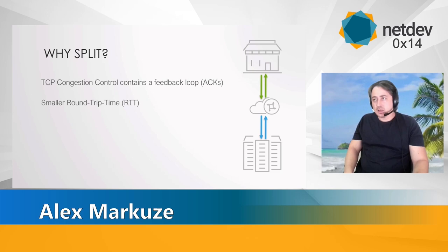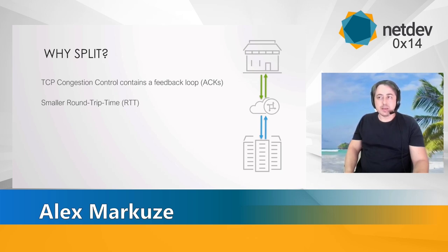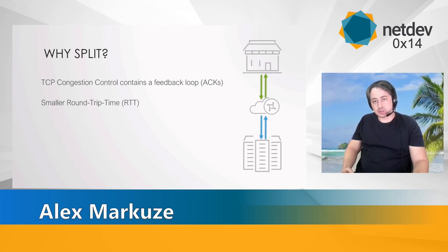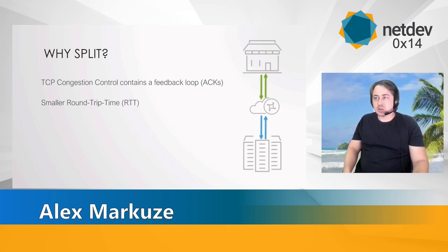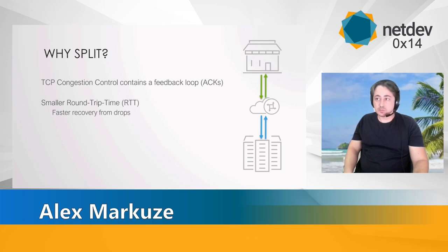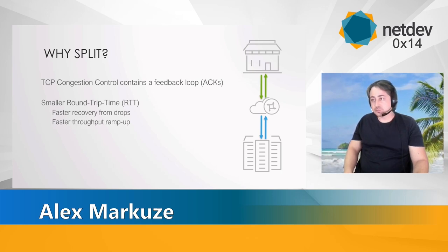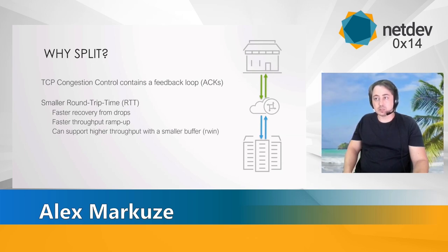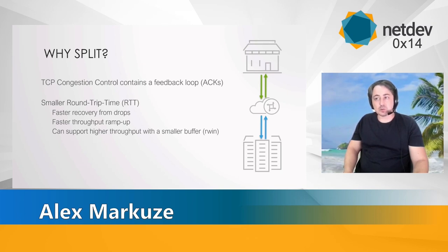So why is this useful? TCP modulates its behavior based on the ACKs it receives. A tighter control loop provides a better TCP experience. A shorter round-trip time provides several benefits: faster recovery from drops, a faster ramp-up of speed and better throughput, better throughput with smaller buffers, and better competition with other small RTT flows.